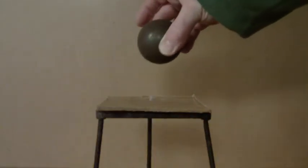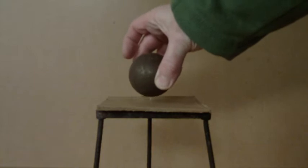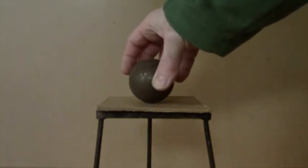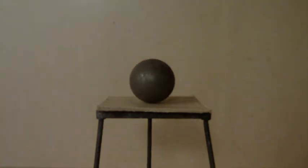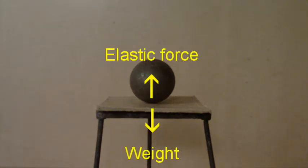When I place the weight on top of this wooden board, nothing seems to happen. The board does, however, deform, only just by a very small amount. Just enough so that the elastic force produced by the deformation exactly balances, again, the weight of the object acting downwards due to gravity.